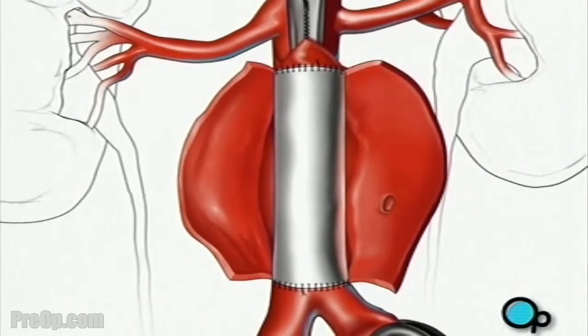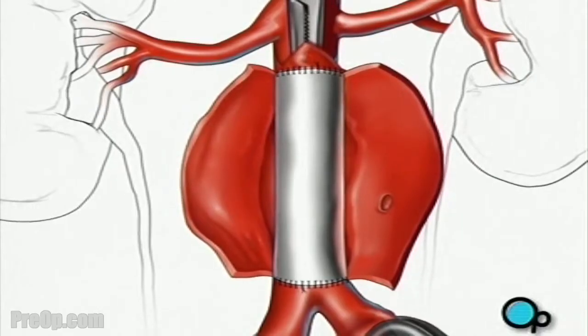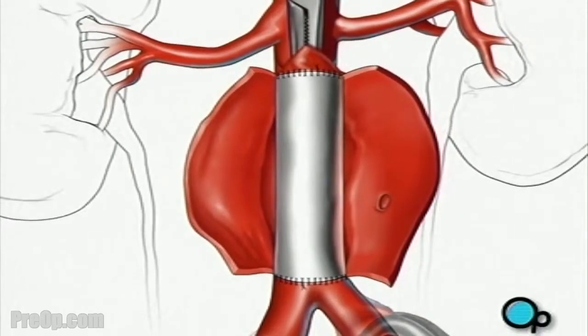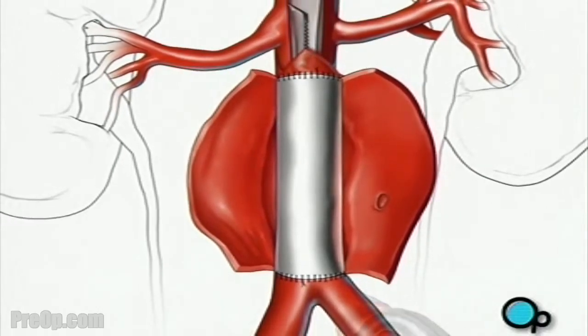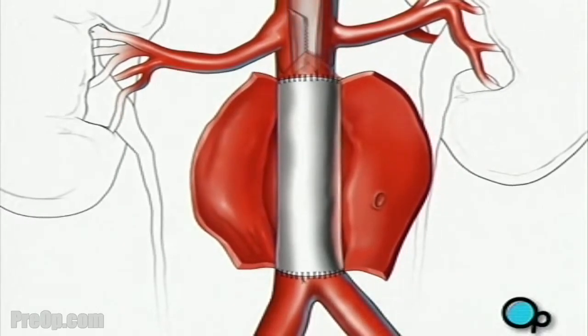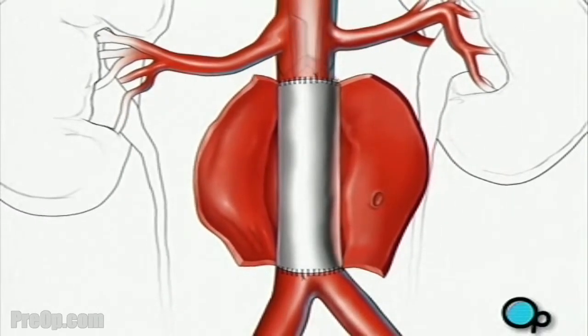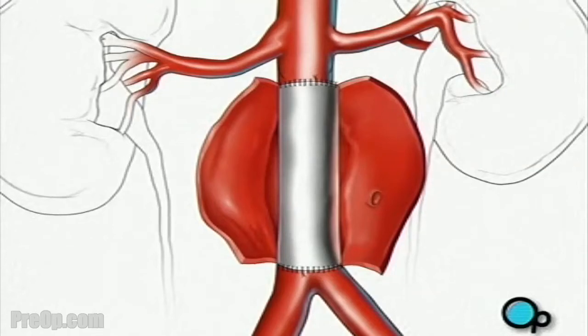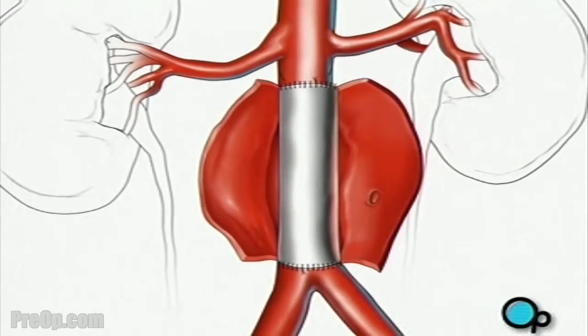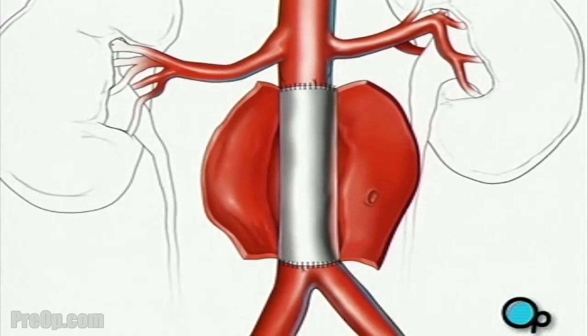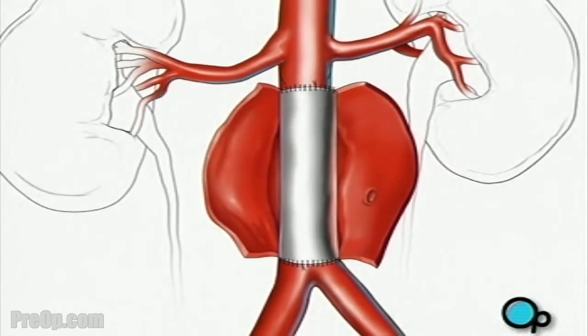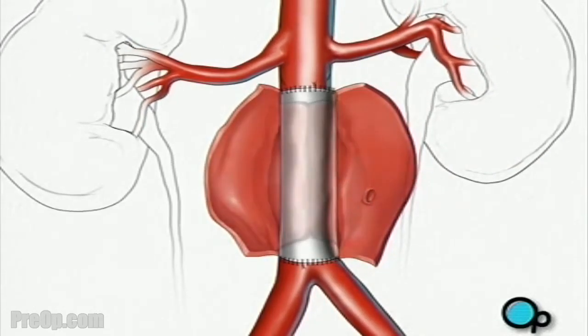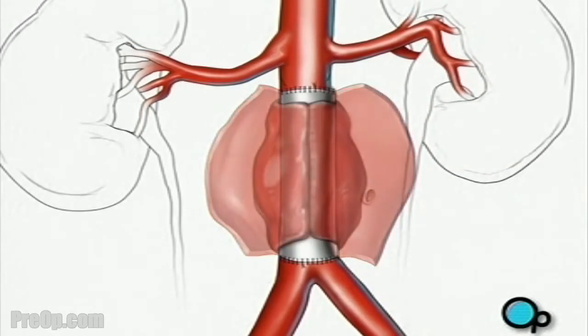One by one, your doctor will remove the clamps, restoring blood flow to the legs. After verifying there are no leaks around the surgical field, the team will finally close the vessel with sutures.